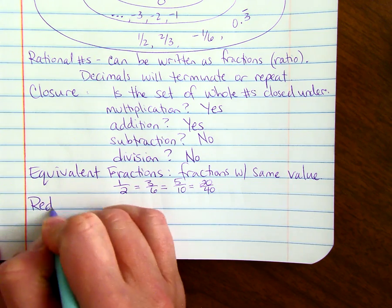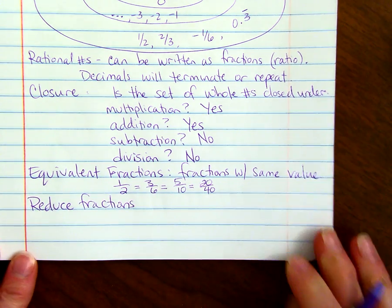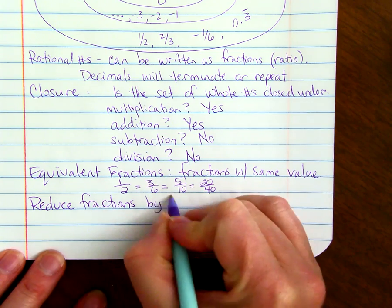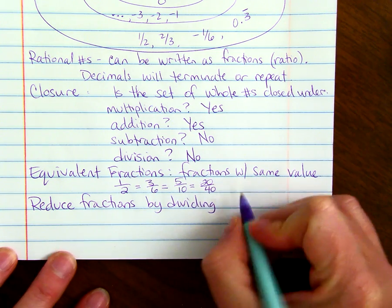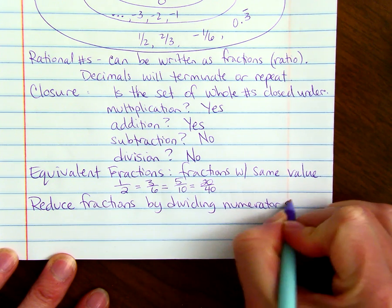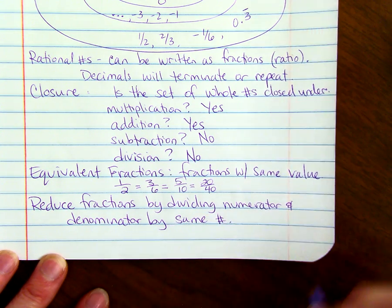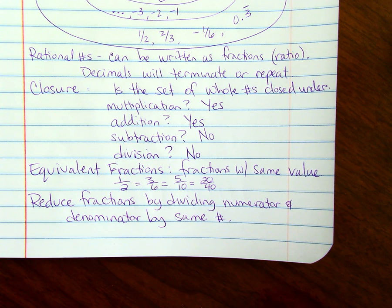We reduce fractions by dividing the numerator and the denominator by the same number. I'm going to show you an example of a way to reduce when you have bigger numerators and denominators as well. I'm going to turn the page.